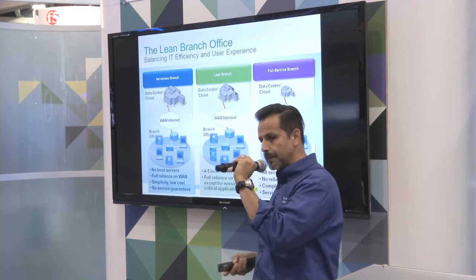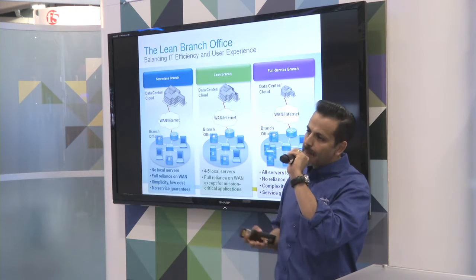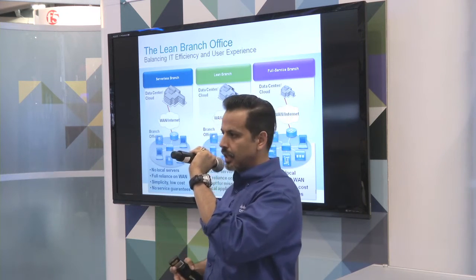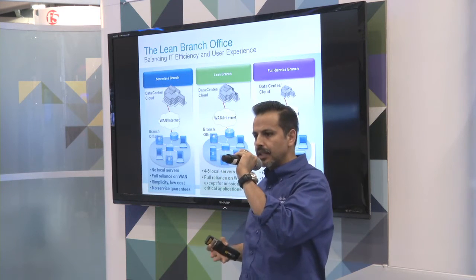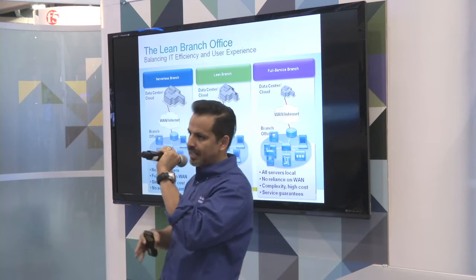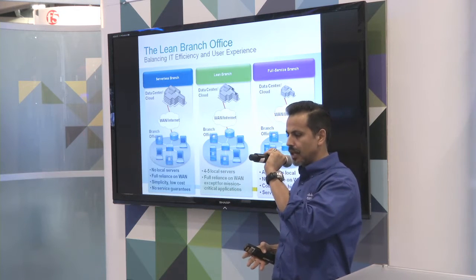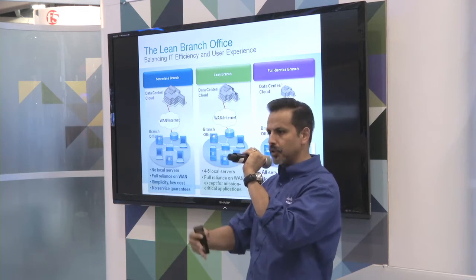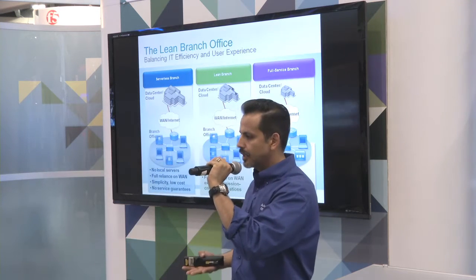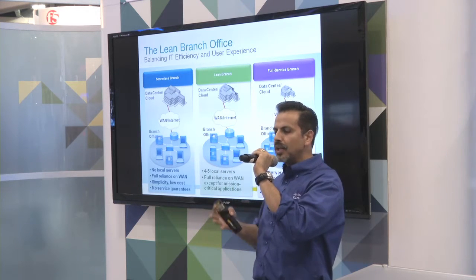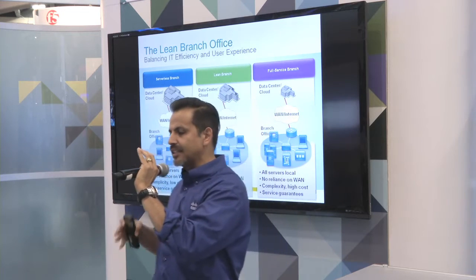So what we're trying to aim for is the lean branch approach. There are applications you use at your remote offices that can be hosted in the cloud, and if the WAN goes down, users can live without those for a certain amount of time. But for mission critical applications, why not have enough compute to run those offline? And as you do that, really converge your infrastructure so that it's easy to maintain, easy to manage, and cost effective.